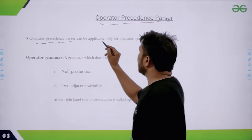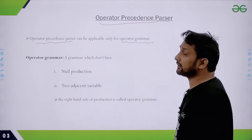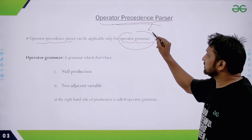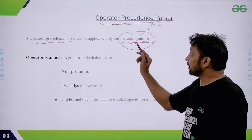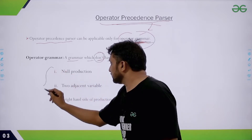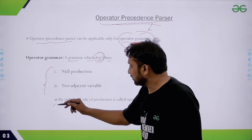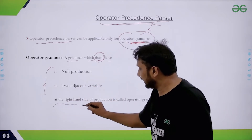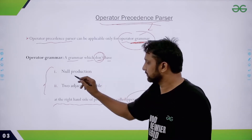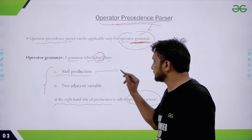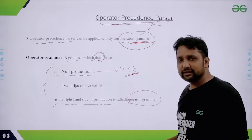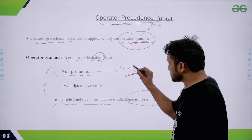Operator precedence parser can be applicable only for operator grammars. What are these operator grammars? A grammar which does not have two types of productions — null productions and two adjacent variables at the right-hand side — is called an operator grammar. Null production means a grammar should not have a production like A → epsilon. If a grammar does not have such a production, that grammar is an operator grammar.